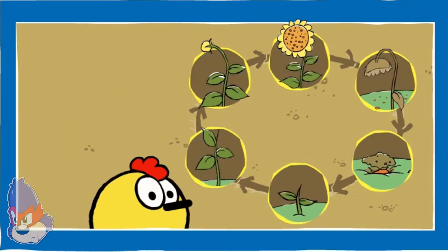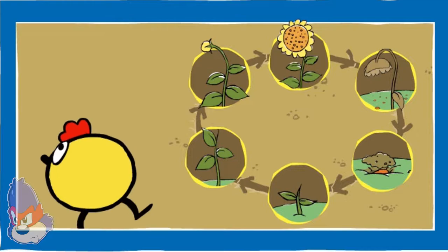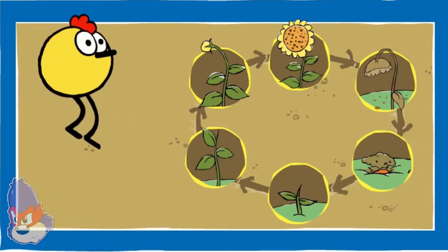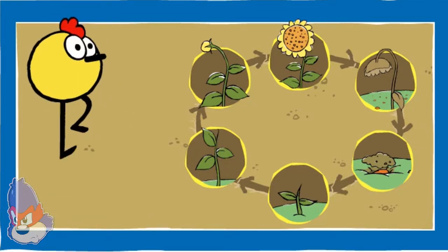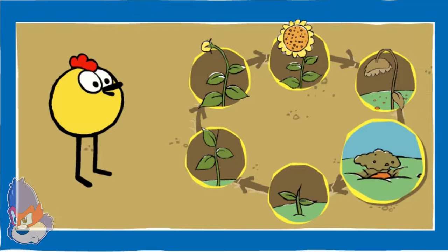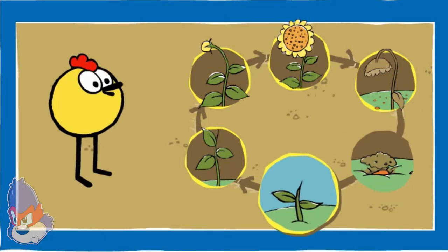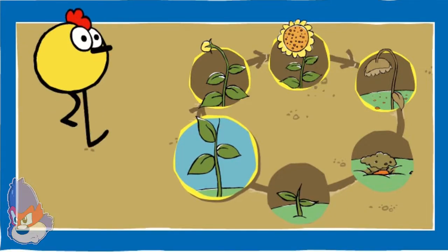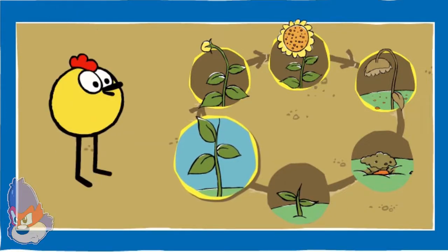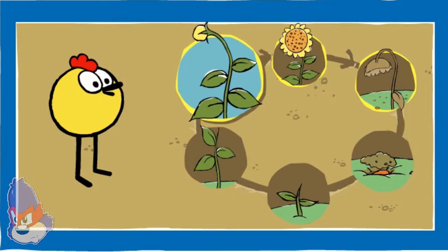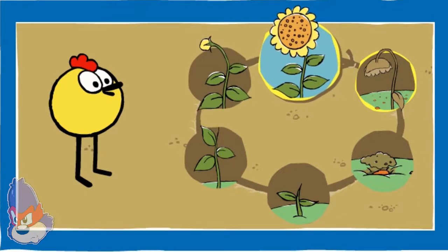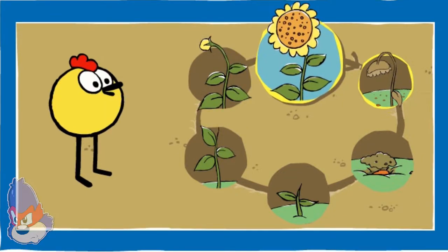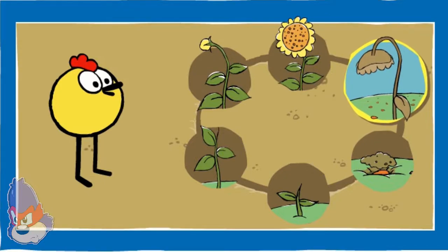Good work! All the pictures are in the right order. This is how a sunflower grows and changes over time. A sunflower seed gets buried in the dirt. With water and sunlight, up sprouts a tiny sunflower plant. The sprout grows into a big plant with leaves. The sunflower plant grows a bud. The bud blossoms into a flower and seeds form. Finally, the seeds fall into the dirt.